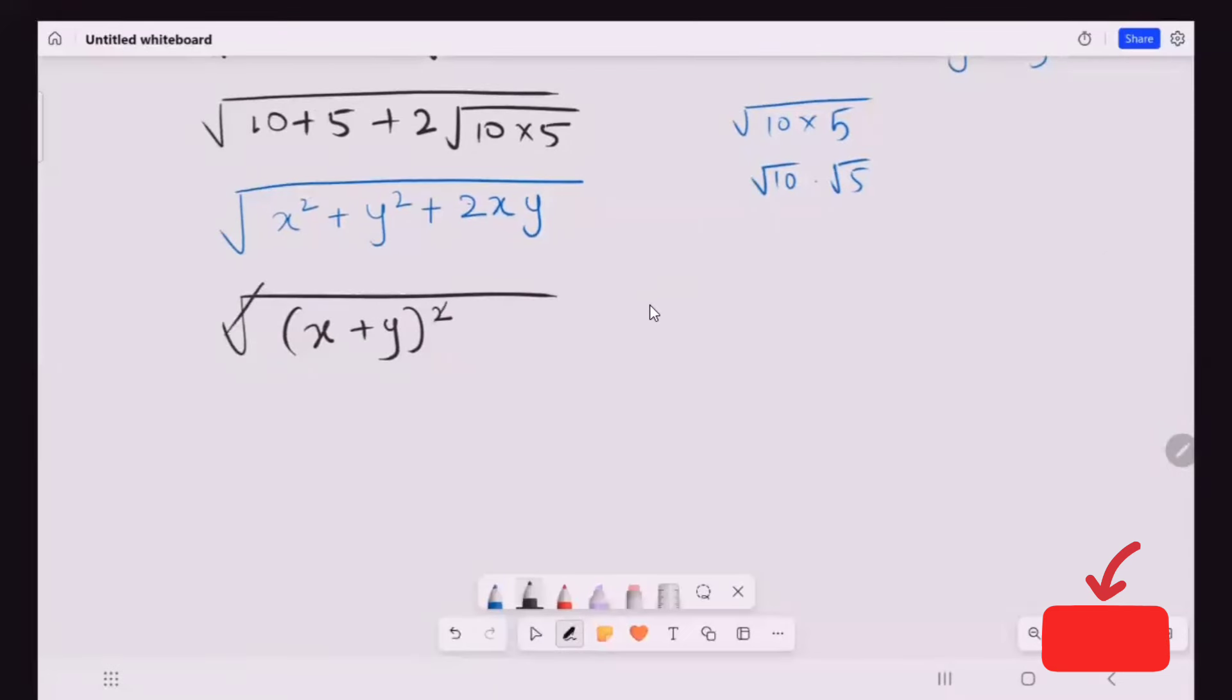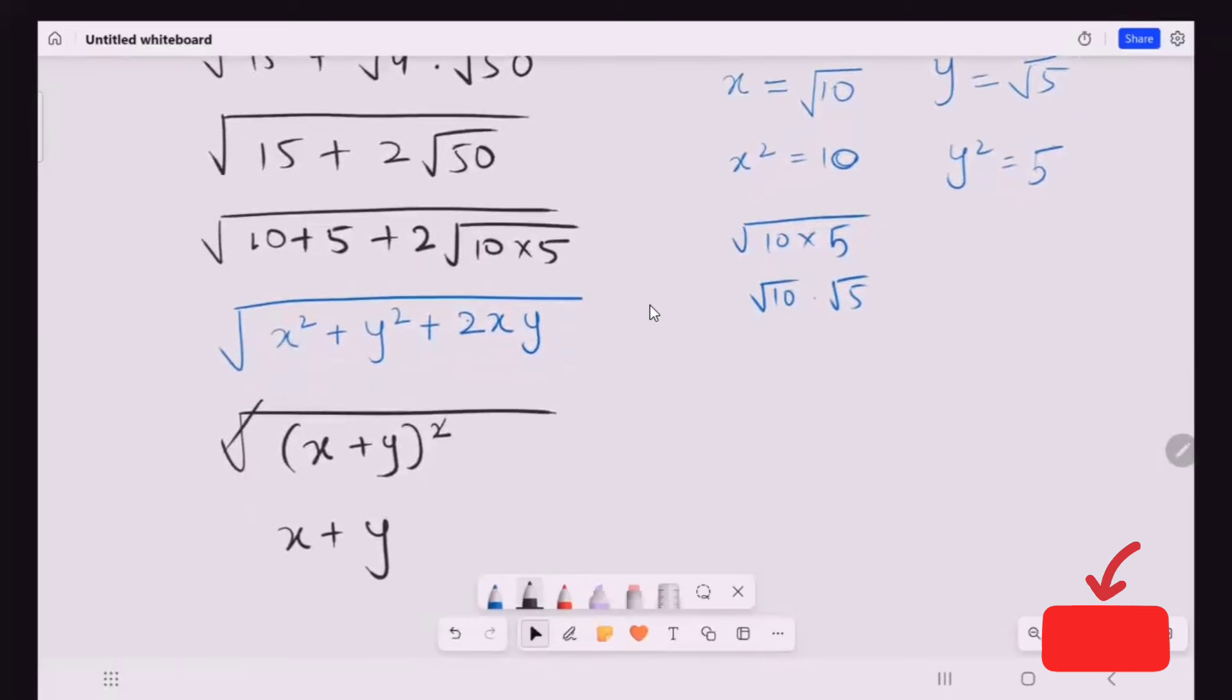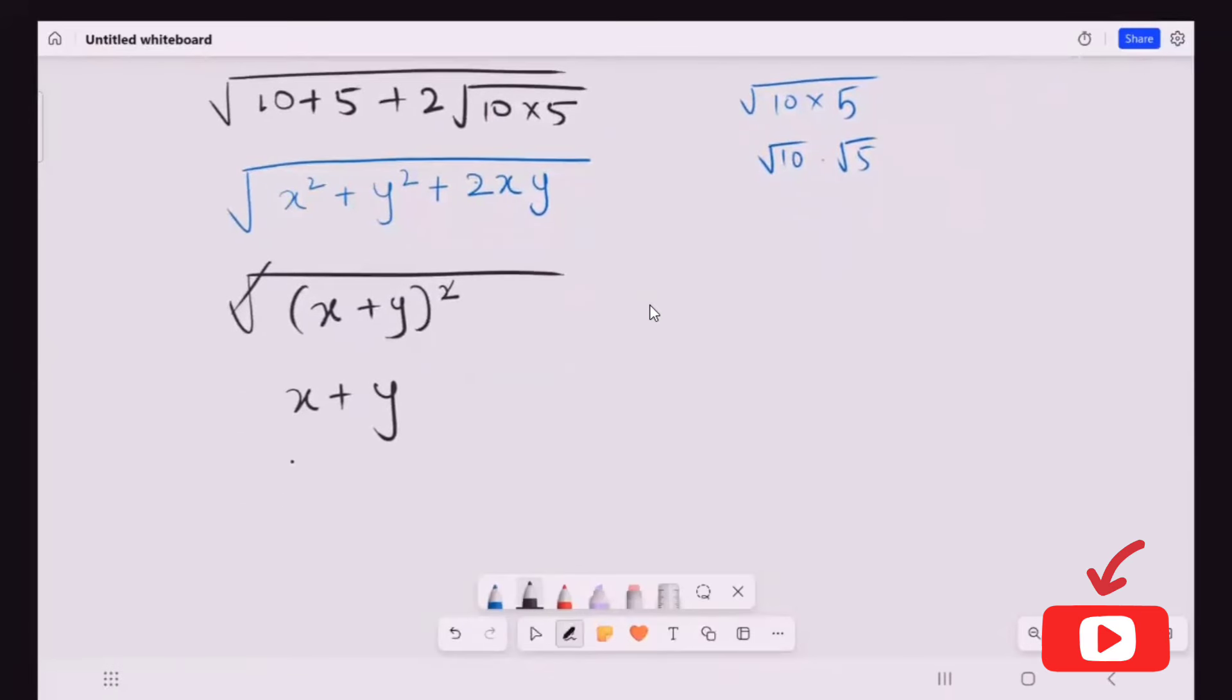This we can solve with this, x plus y. Now I'm going to plug in the x and y value. So our x value is radical 10, our value is 5.